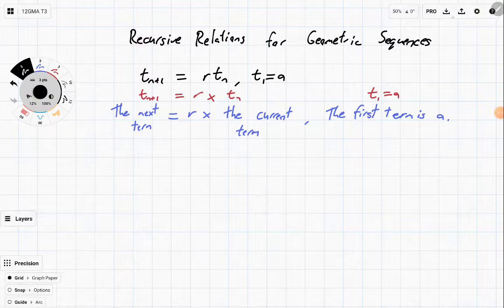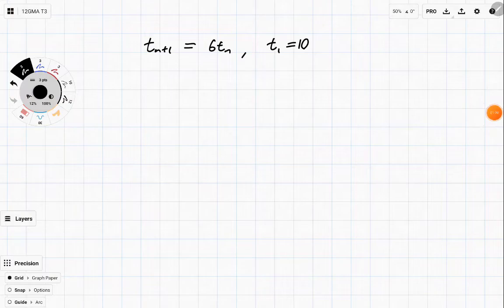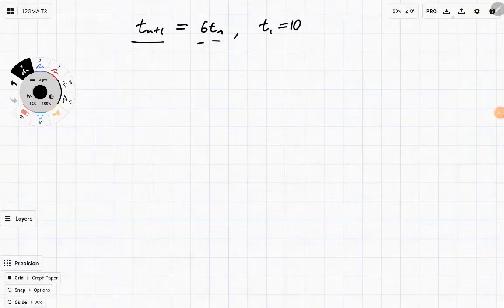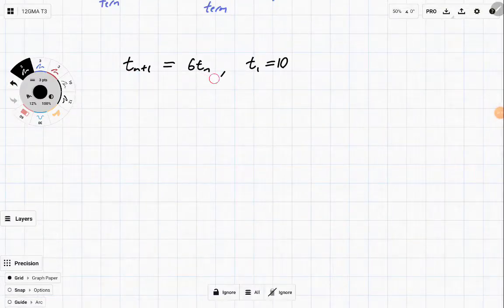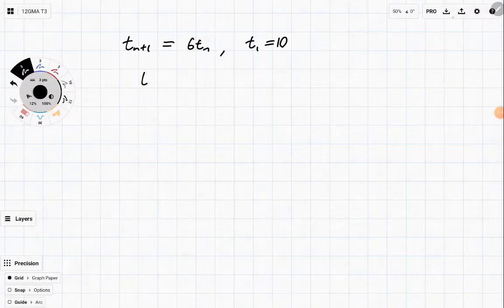So let's use one to generate a sequence. Let's generate the first few numbers in the sequence. So this rule says the next term is equal to 6 times the current term. So in essence, since the first term is 10, then the second term is going to be 6 times 10, 60.